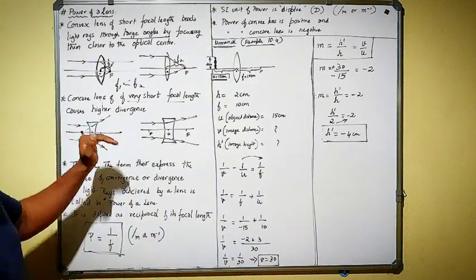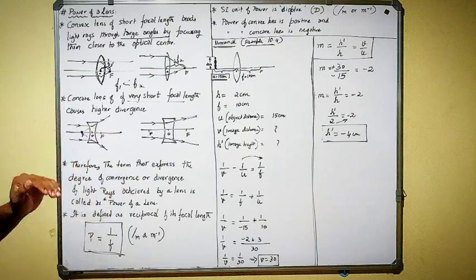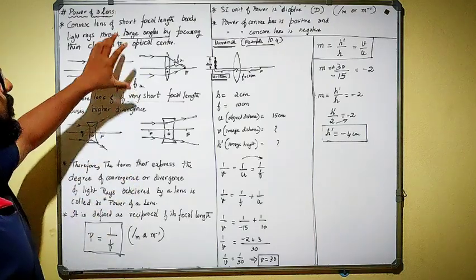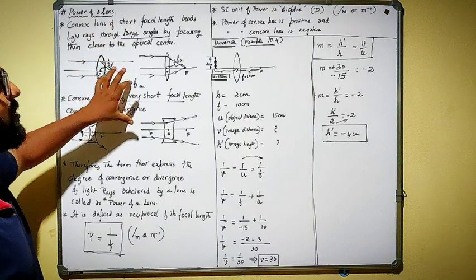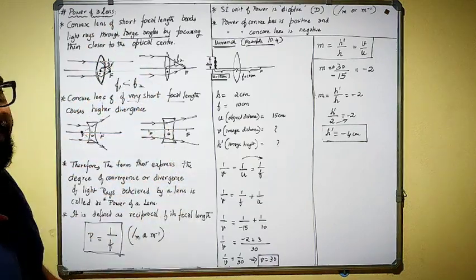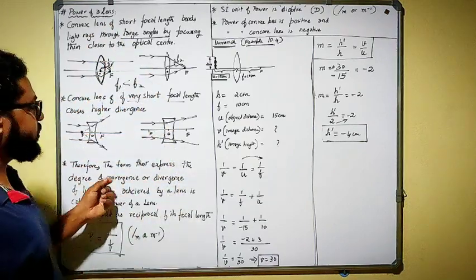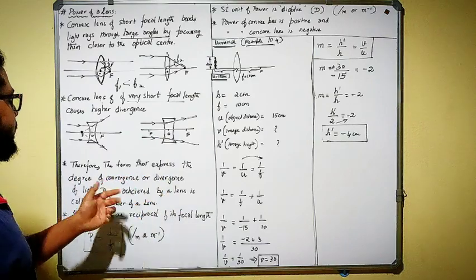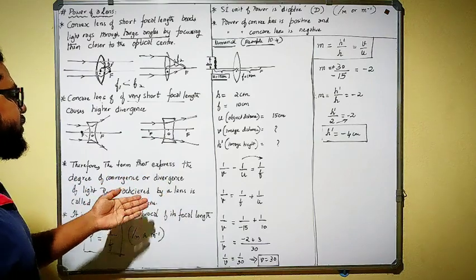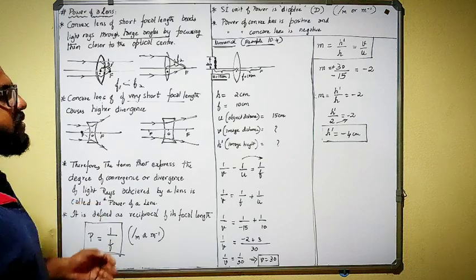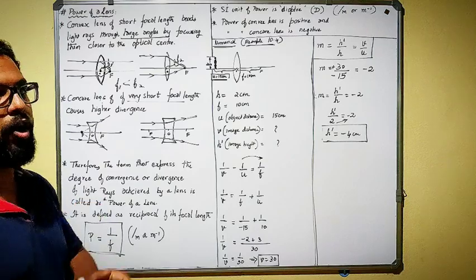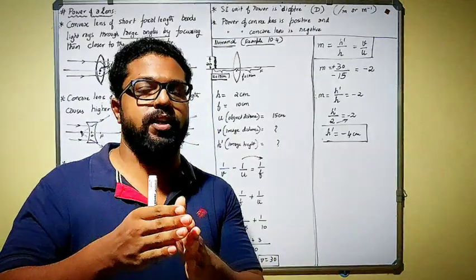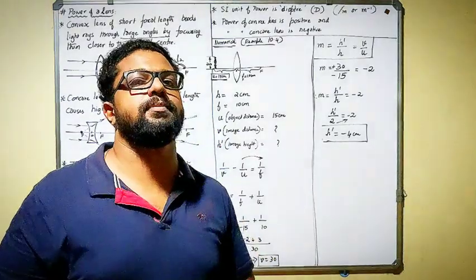Clearly understand these two concepts, because I will be explaining the term power of a lens using these examples. The term that expresses the degree of convergence or divergence of light rays achieved by a lens is called the power of a lens — how much a lens can converge or diverge.